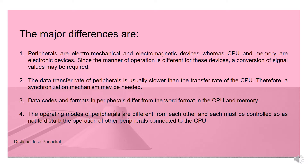The second difference is that the data transfer rate of peripherals is usually slower than the transfer rate of the CPU, so a synchronization mechanism may be needed. The third difference is based on data codes and formats, which also differ in peripheral devices as well as in CPU and memory. The operating modes of peripherals are also different from each other, and each must be controlled so as not to disturb the operation of other peripherals connected to the CPU.